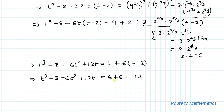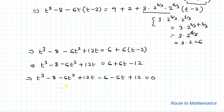In the next step we take all terms from the right hand side to the left hand side. So we have t cubed minus 8 minus 6t squared plus 12t minus 6 minus 6t minus 6t plus 12 equals 0. Combining like terms: t cubed minus 6t squared plus (12t minus 6t minus 6t) plus (minus 8 minus 6 plus 12) equals t cubed minus 6t squared minus 2 equals 0.